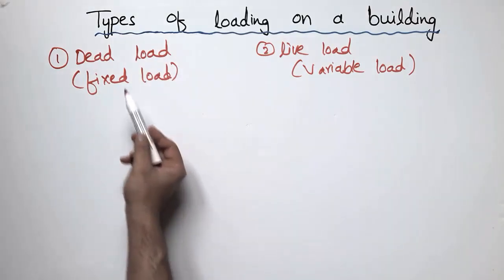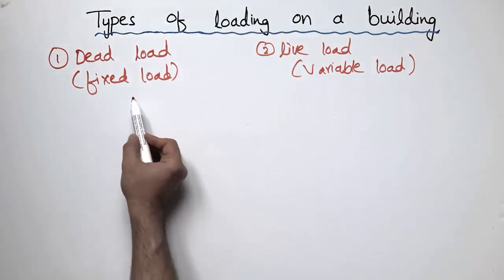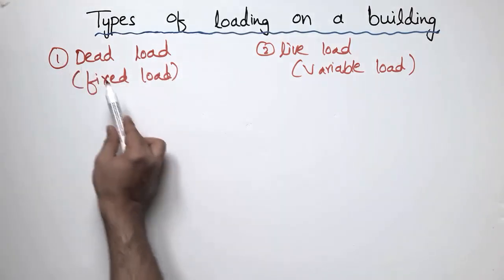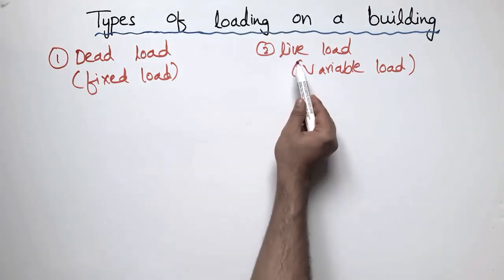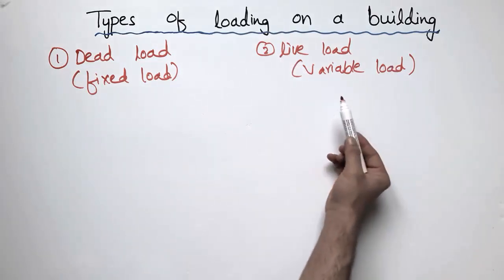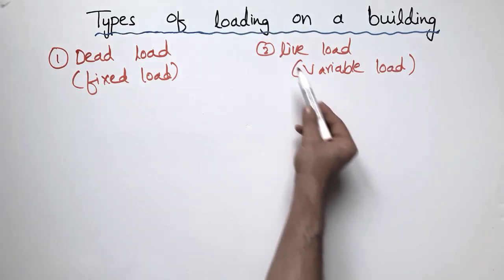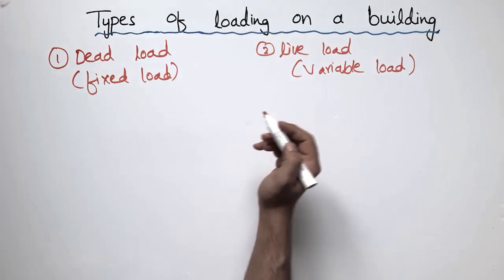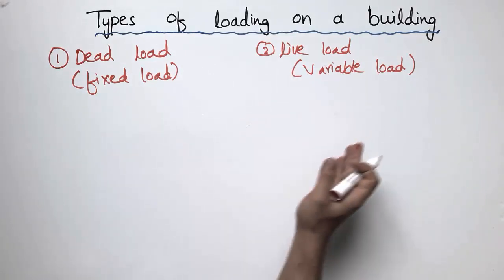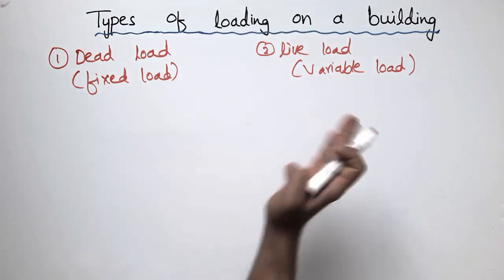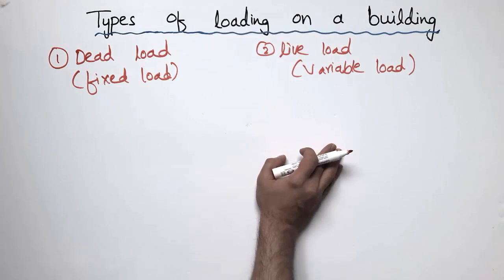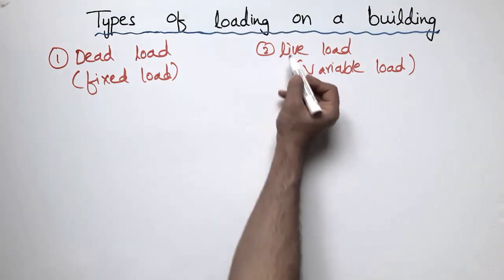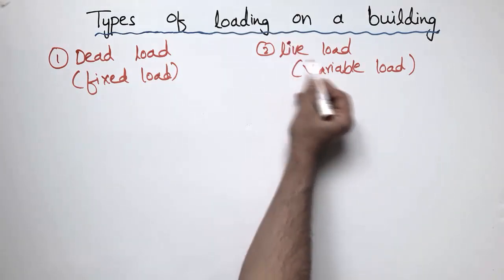The dead load does not change with the location of a building — it is always fixed in one position. The live load, on the other hand, changes with the location. For example, the live load may be a snow load, earthquake load, or any other type of load, which I will explain later. This is a type of loading which is always variable with the location.